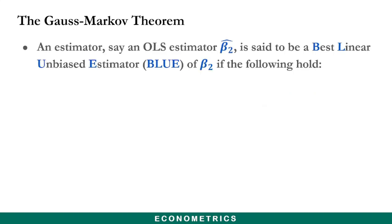According to the Gauss-Markov theorem, an estimator, say an OLS estimator beta2 hat, which happens to be the regression slope coefficient, is said to be a Best Linear Unbiased Estimator, or BLUE, of the population parameter beta2 if the following conditions hold.